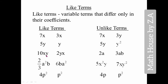In the third example, 10xy and 2yx: xy and yx are the same because x and y are in multiplication. Just as 2 × 3 equals 3 × 2, xy and yx are the same, so they are like terms. Next, 2a and 3ab: 2a has only a as a variable while 3ab has two variables a and b, so they are unlike terms. For 2/3 a²b and 6ba²: the position can change, but a is squared in both and b has power 1 in both, so they are like terms.